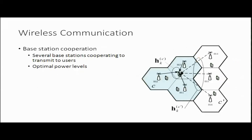For instance, in wireless communications, consider a cooperative wireless scenario. Traditionally we have a single base station transmitting to a single user, but if you generalize it, you can have several base stations cooperating to transmit to several users. In such a scenario, there are several things to be optimized — for instance, the optimal power levels at which the base stations transmit, or the desired signal-to-noise power ratios of the various users. This can be posed as an optimization problem.